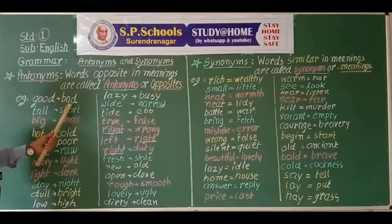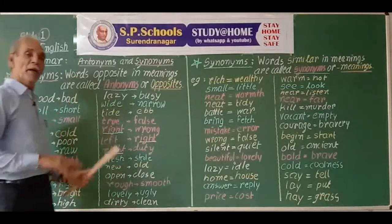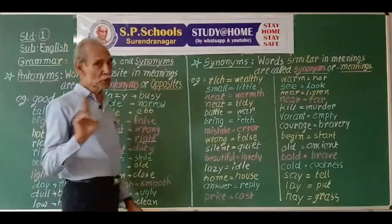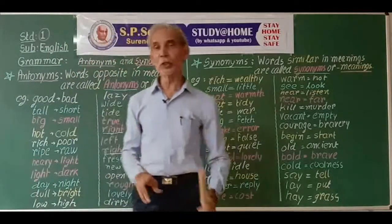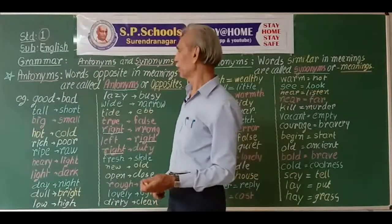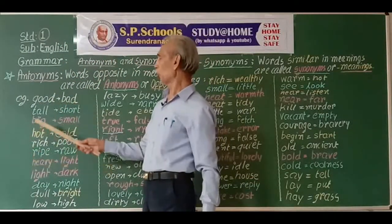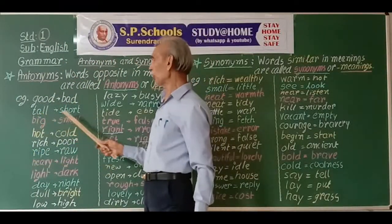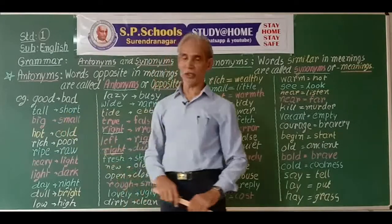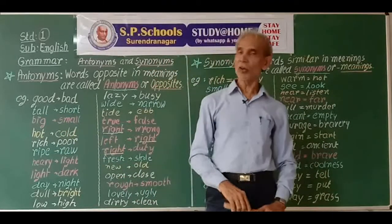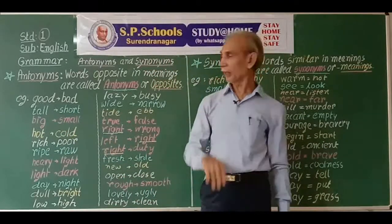Good and bad are opposite in meaning. Similarly, tall and short are also opposites — a tall man versus a short man, which is not tall.